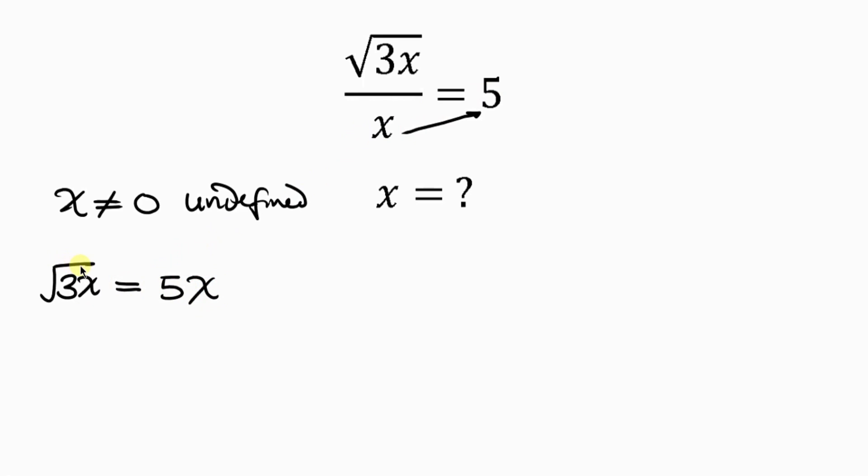Now, to get rid of this square root, we take the square of both sides. So, we have the square root of 3x. Take the square of the left, equal to 5x. We have to take the square of the right. Notice that this square cancels out the square root, leaving behind 3x to be equal to...